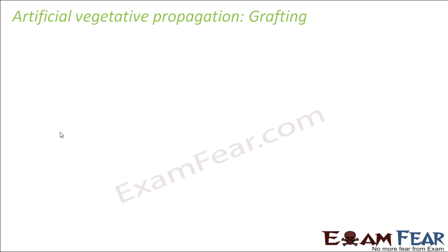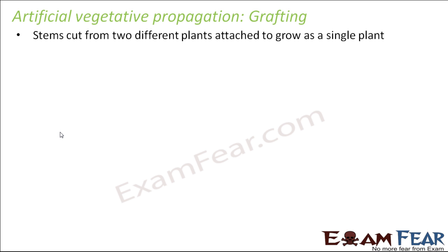This is also going to be very interesting because this can actually mix and match two different plants. Stems cut from two different plants are attached to grow as a single plant. So if you want certain characters from plant one and certain characters from plant two, what you can do is cut a stem from each and attach them together so they grow as one plant, with certain traits from each.